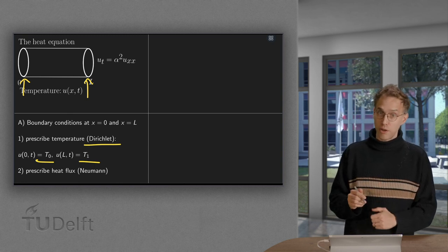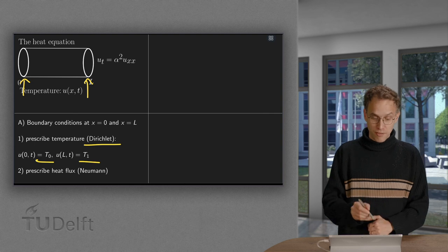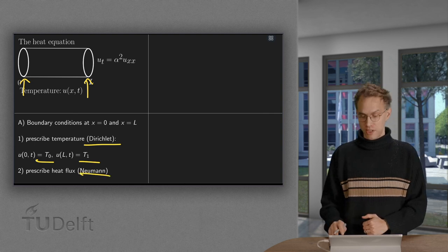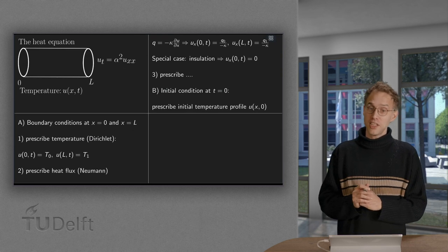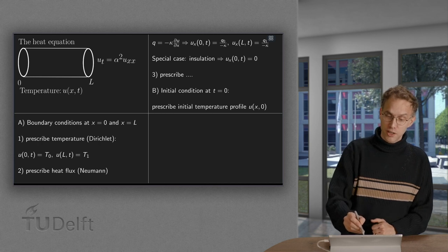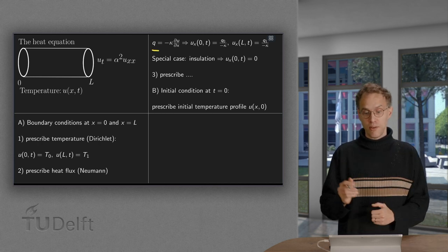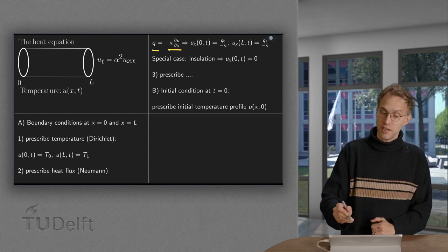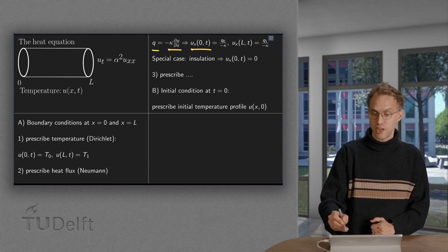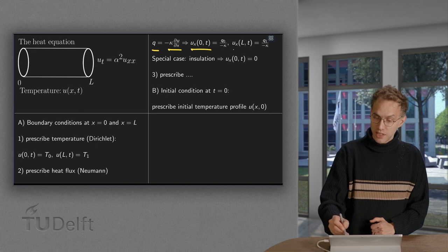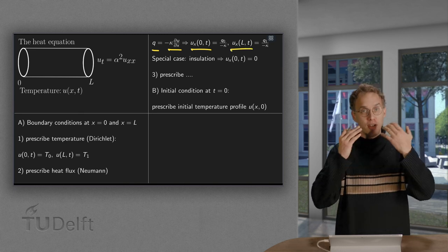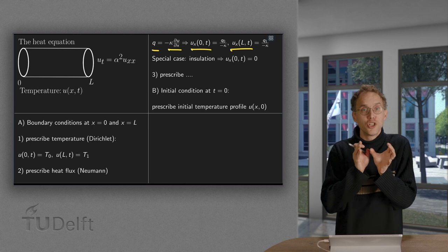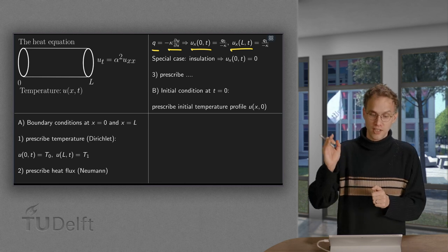We also have another option. You can prescribe the heat flux, a so-called Neumann condition. What do we do in that case? We will specify the q at 0 and L. Q equals minus kappa du dx, so we basically specify ux at 0 and t, and ux at L and t. We specify some inflow at 0 or at L.